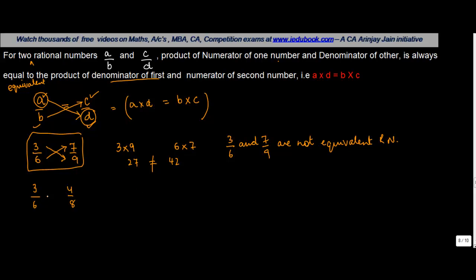Let's try it out for this one. We have 3 into 8, the cross multiplication, then you have 6 into 4. 6 into 4 is equal to 24, 3 into 8 is equal to 24, and both of them are equal.